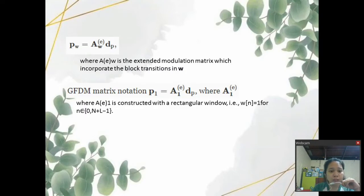Note that the preamble sequence designed for OFDM can be reproduced using the GFDM matrix notation. P1 equals A sub 1 DP where AE is constructed with a rectangular window.